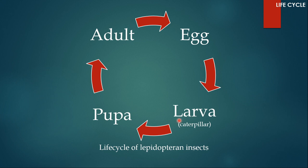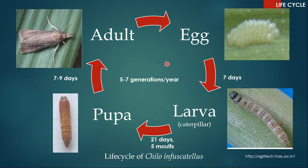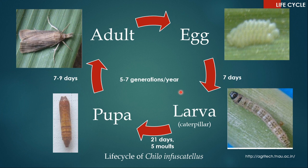Any Lepidopteran insect's life cycle has these stages: the adult lays eggs, the eggs hatch into larva or caterpillar, the caterpillar pupates, and the pupa emerges again as the adult. For Chilo infuscatellus, the females lay eggs which take about a week to hatch into caterpillar. The caterpillar takes about 21 days to go through five molts and then pupates. The pupa emerges as the adult in seven to nine days. There will be five to seven generations in a year — more if the weather is warmer, fewer if colder.